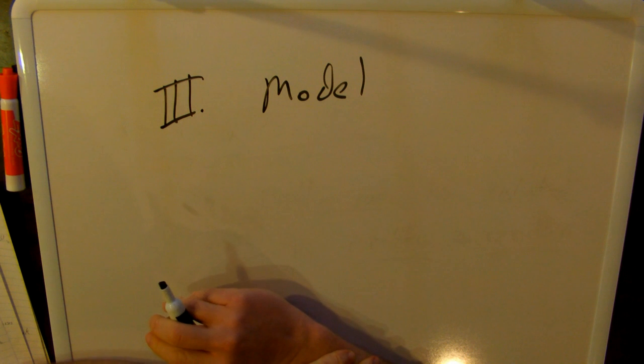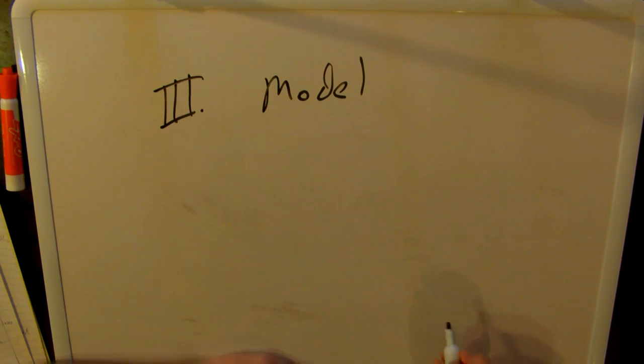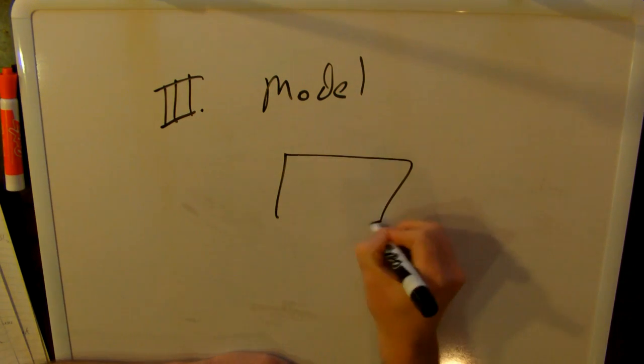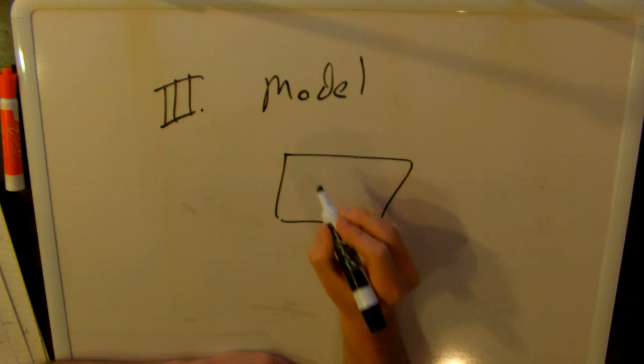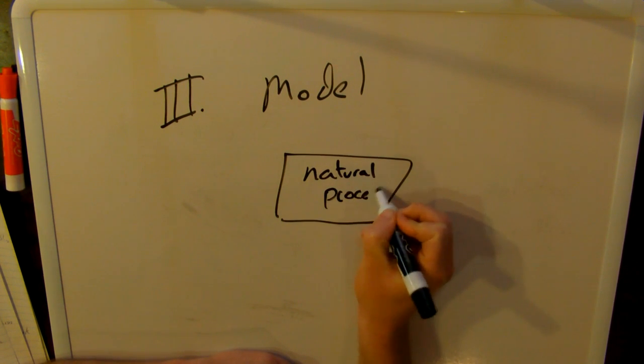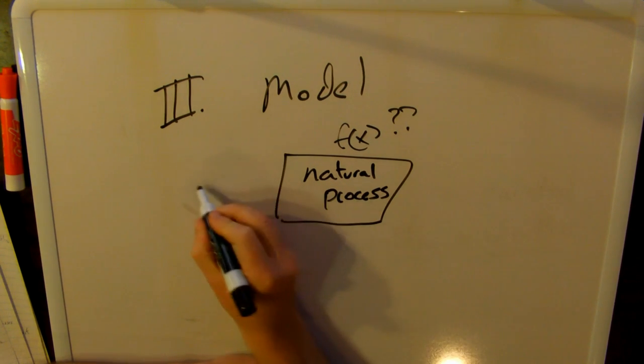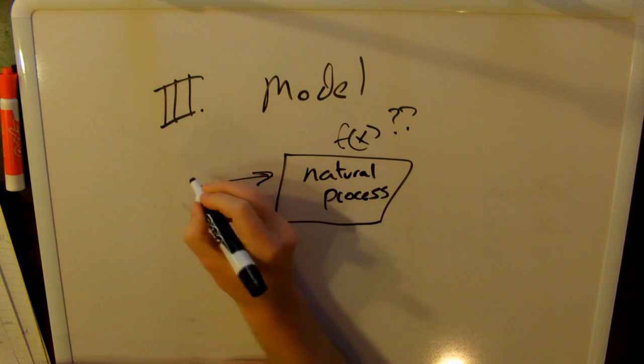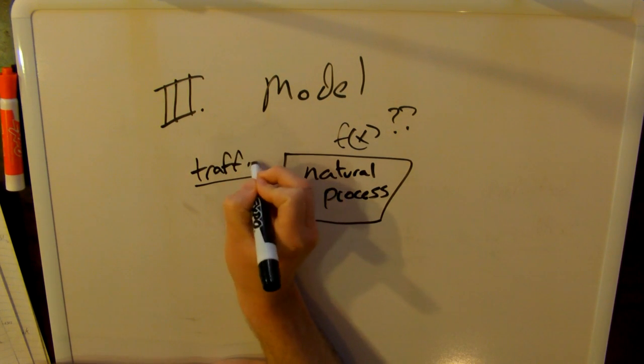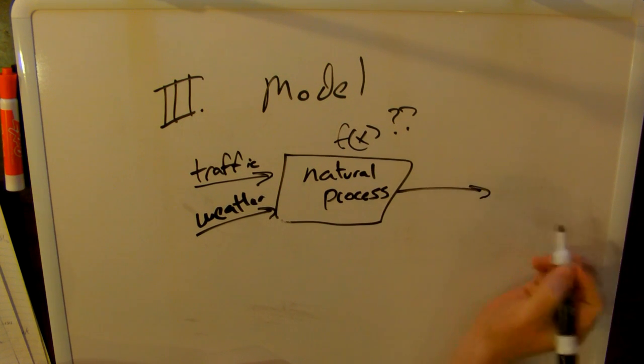In our hypothesis, we said that there's some relationship. We don't necessarily know what it is, but we're going to try and determine that. And so what we can do is, first of all, let's kind of more rigorously define that. So what we're saying when we say there's a relationship is we're saying that there's some natural process. I mean, as natural as cars driving down roads can be. But it's all governed by nature. So there's some natural process. It's a black box. We don't know what's going on in here. And into this black box goes traffic and weather, and out comes pollution.